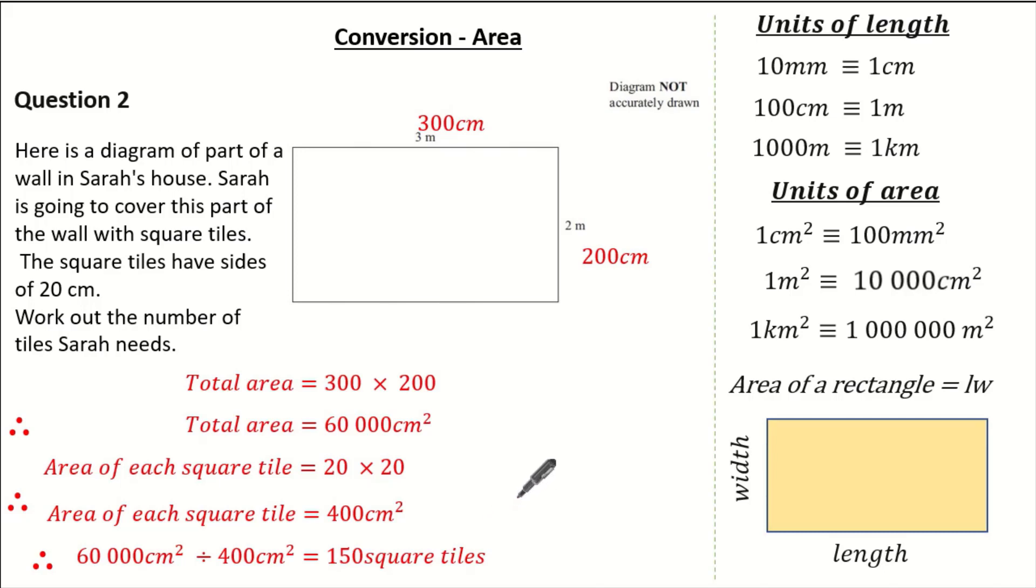And then we could simply divide. 60,000 divided by 400 would give us our 150 square tiles.